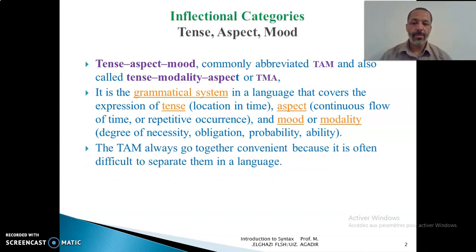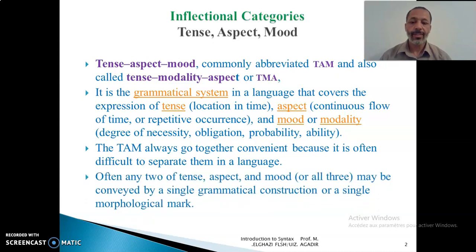Tense, aspect, and mood always go together, and this is a convenient grouping because it is often difficult to separate them in a language. Any two or all three of tense, aspect, and mood may be conveyed by a single grammatical construction or a single morphological mark.